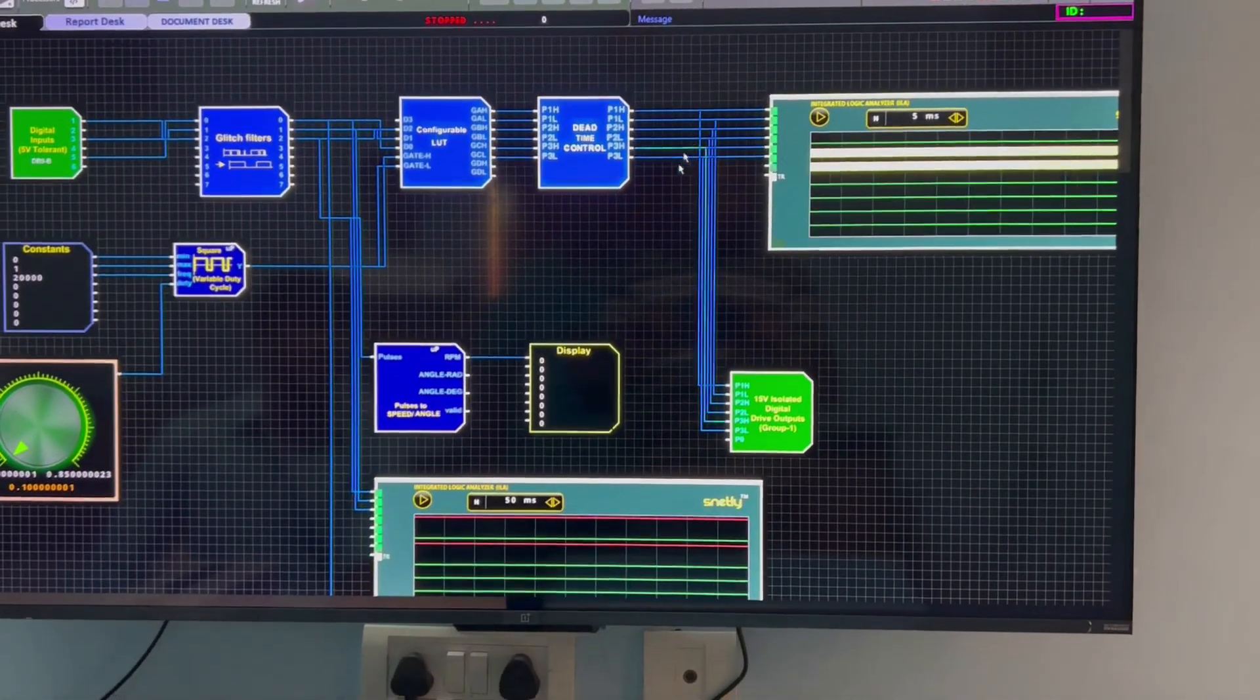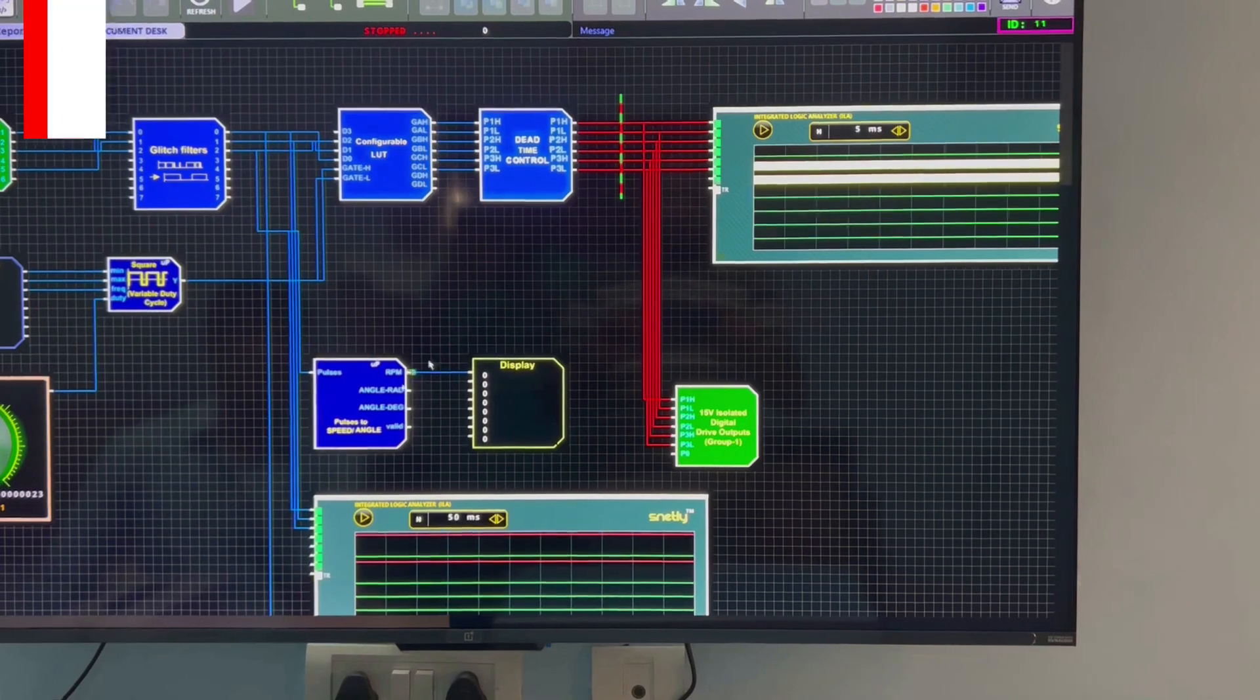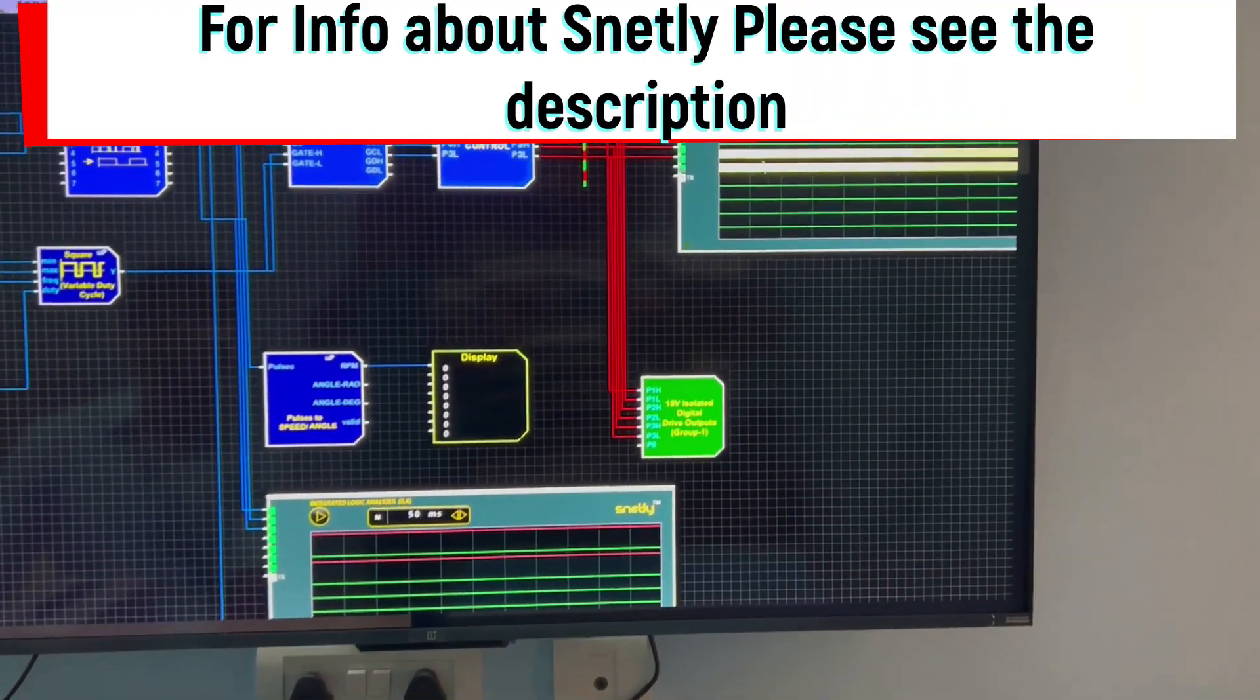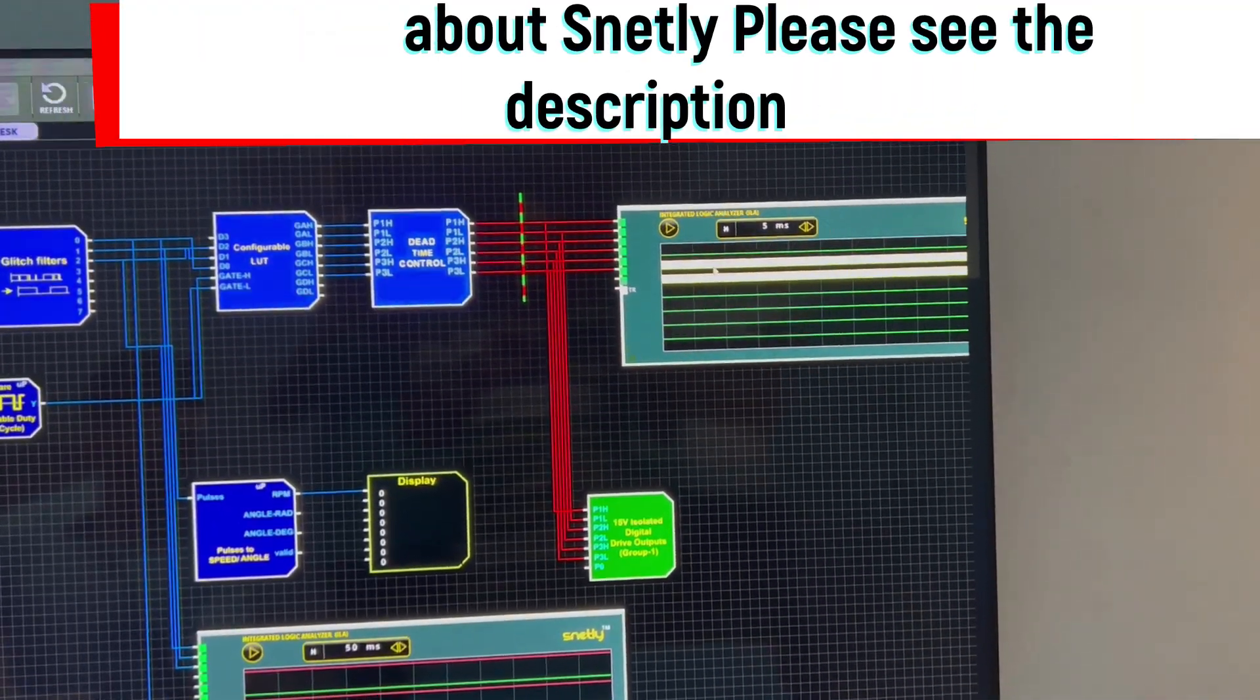In this model, we are generating a total of 6 gate signals. For each lookup table, we will get 2 gate signals, nothing but the 6-step commutation, 120-degree mode output.